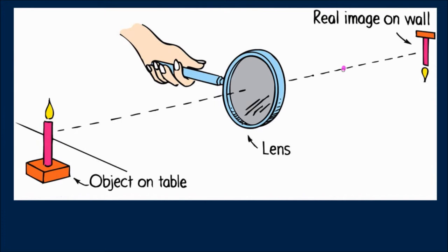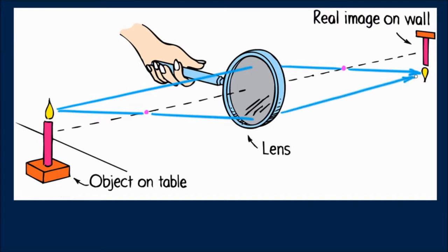I place a purple dot where the far focal point is located. Light from the candle flame that travels parallel to the principal axis after refracting through the lens passes through this focal point. Here's the near focal point. Light from the flame that passes through the near focal point after refracting through the lens travels parallel to the principal axis.